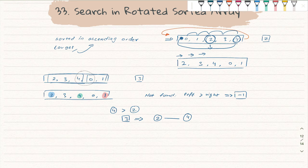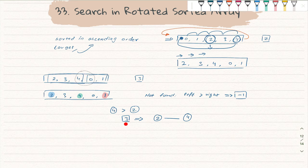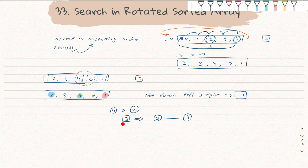The first step is to see if this side is ascending or not. If it is ascending, the second question is: does the target fall within this range? If not, we start looking on the other side. We keep doing binary search and finally either find the number with log-n complexity or return minus one.